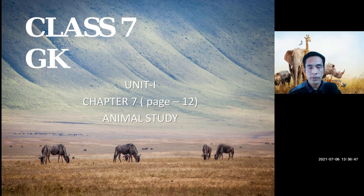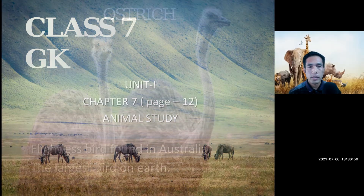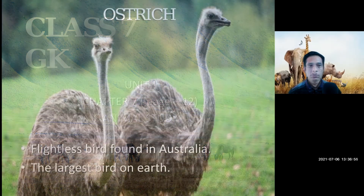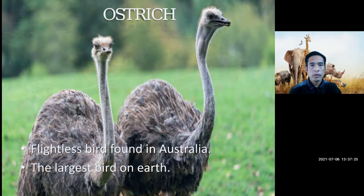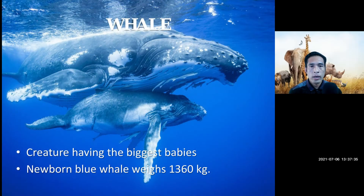Some specific animals which are distinct from their group. The first one is the ostrich. The ostrich is a flightless bird found in Australia. It is the largest bird on Earth.